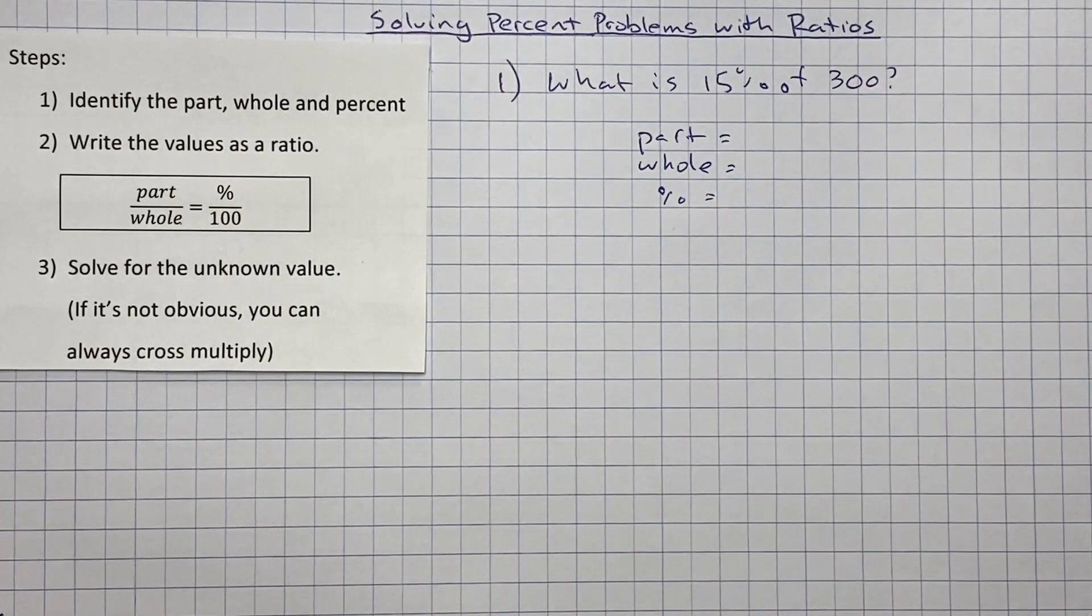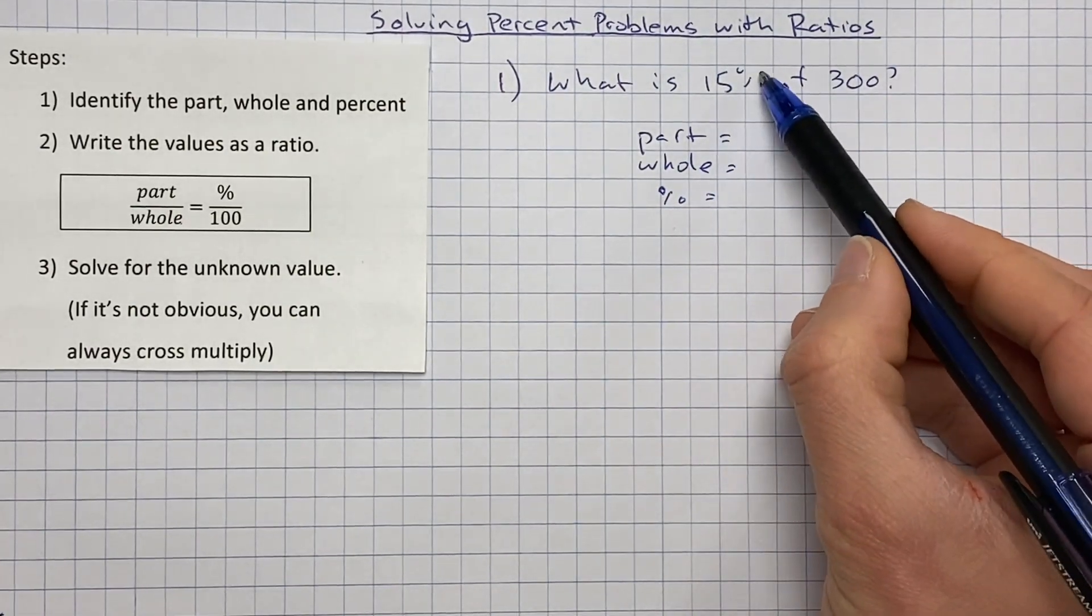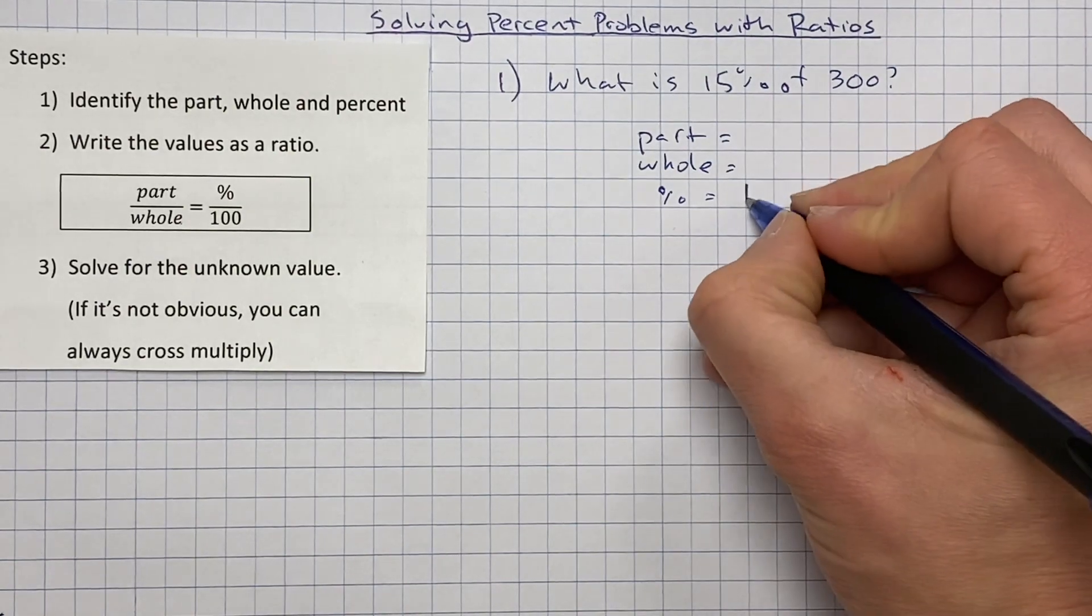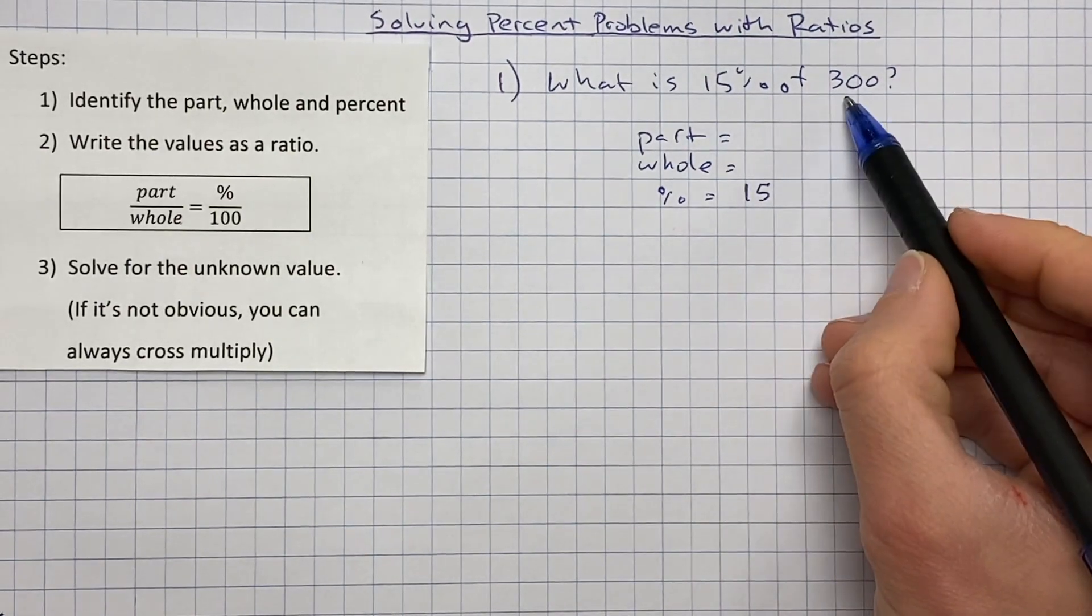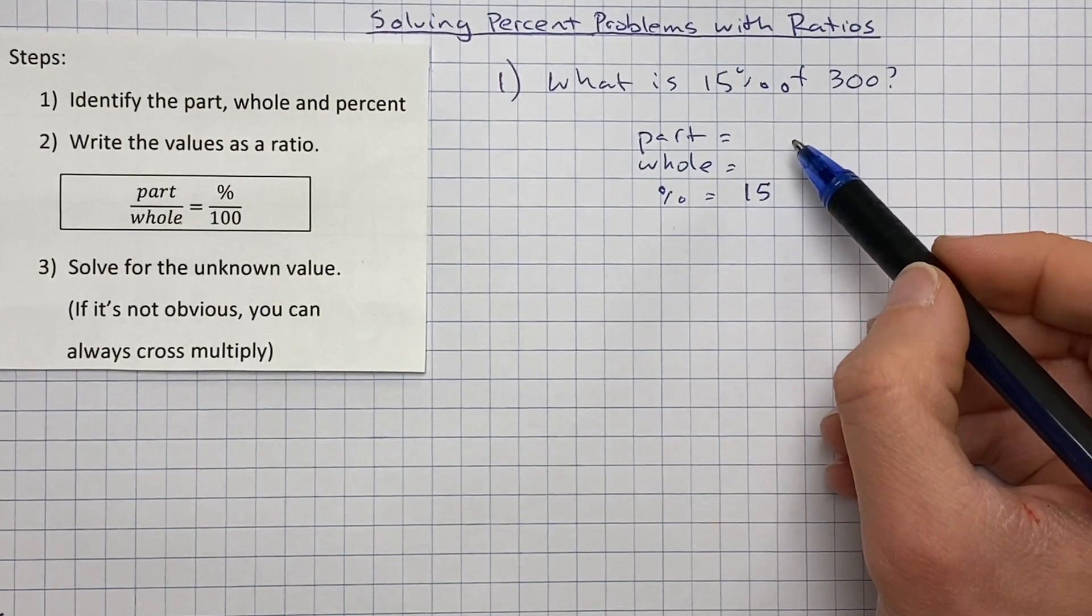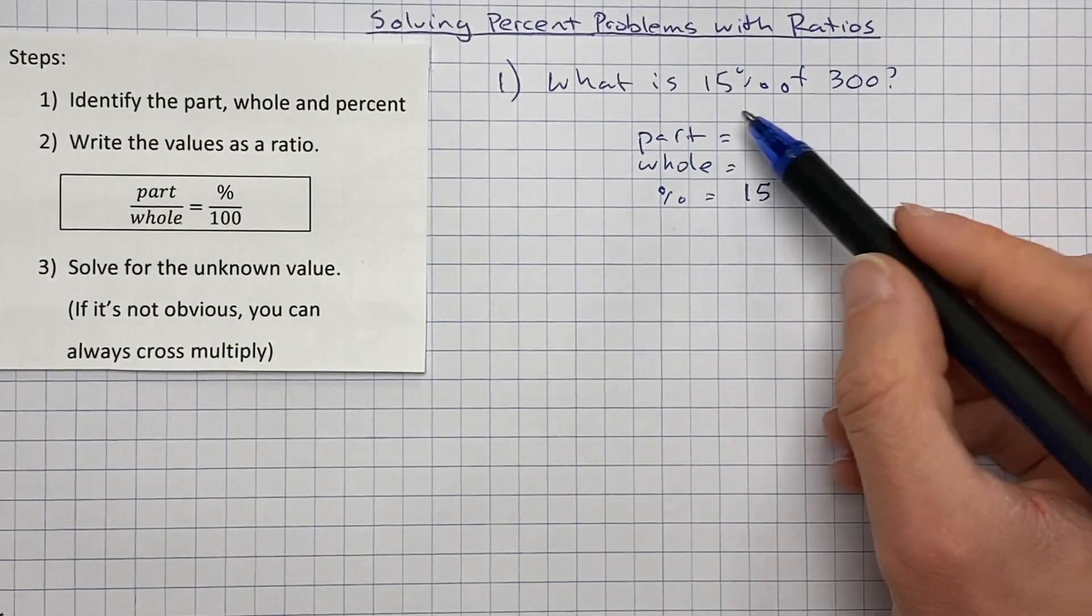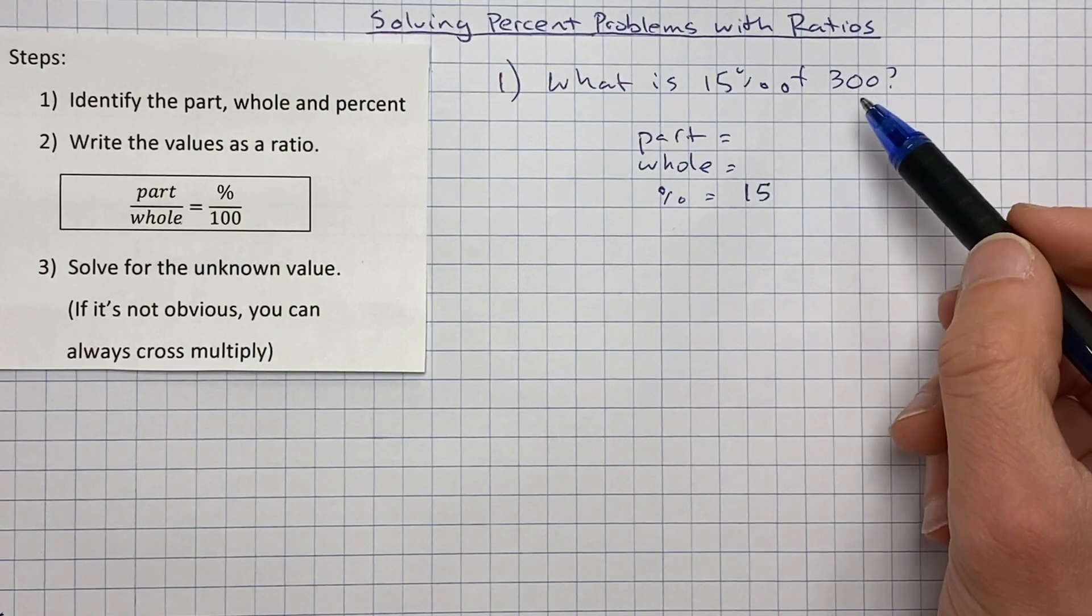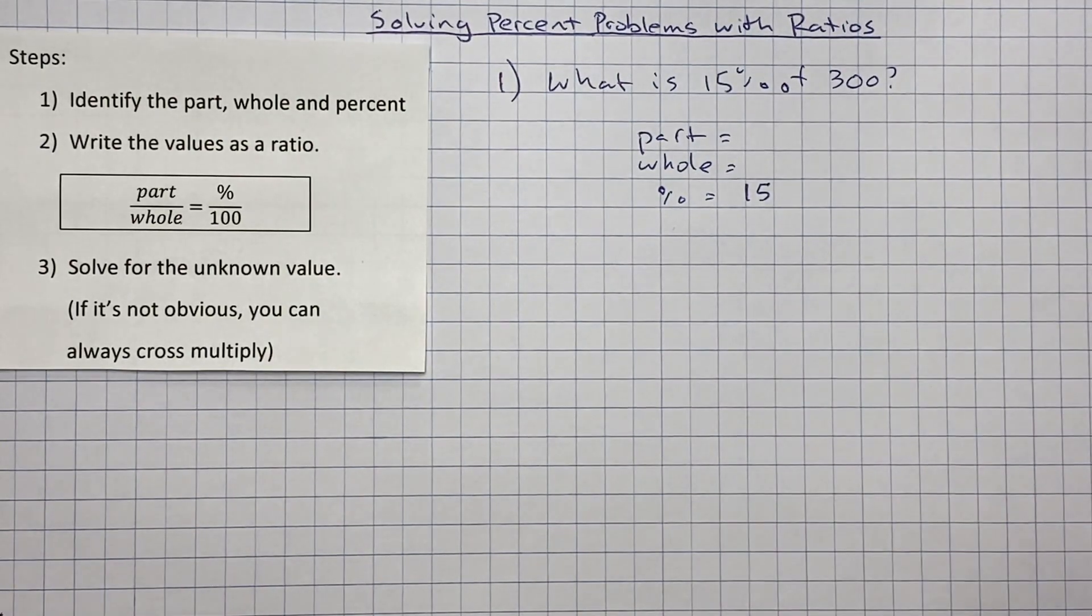Okay, now if I have the part, the whole, and the percent, obviously 15% is the percent because it's got the percent symbol. So that's always going to be an easy one to fill in. That leaves you with one number and think about, is that the part or the whole? Now you can think about what that kind of means. And if we think of this problem, we're saying, what is 15% of 300? Of is our total amount that we are looking for.